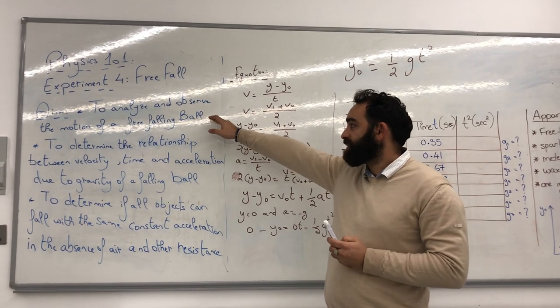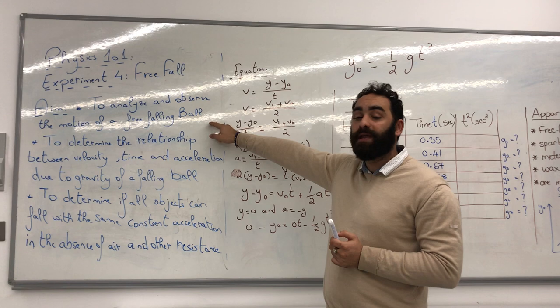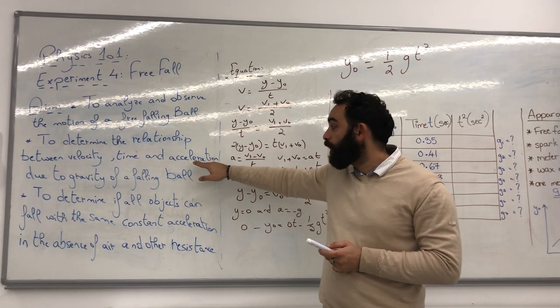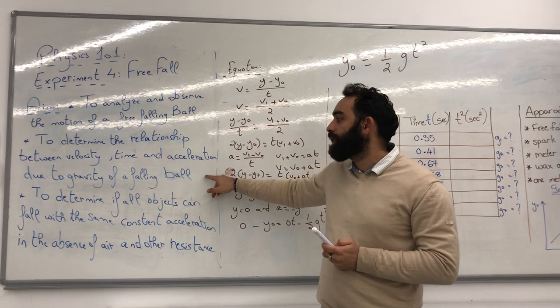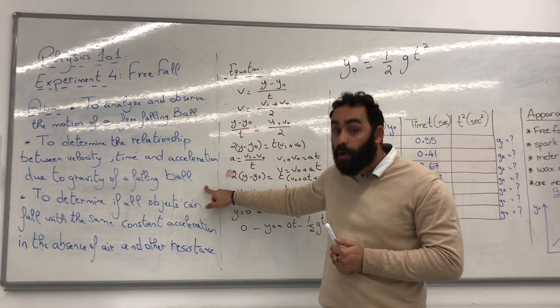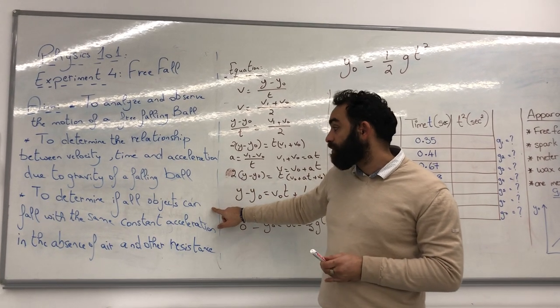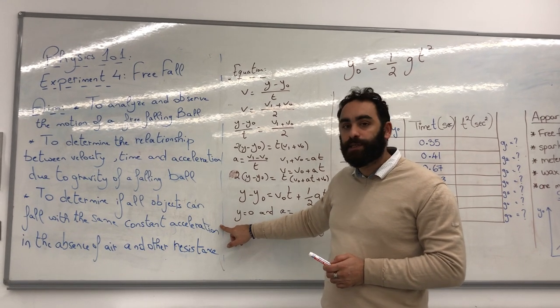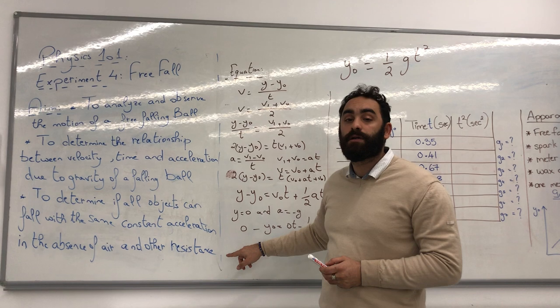Our aim is to analyze and observe the motion of a free falling ball. Secondly, to determine the relationship between velocity, time and acceleration due to gravity of a falling ball. Thirdly, to determine if all objects can fall with the same constant acceleration in the absence of air and other resistance.